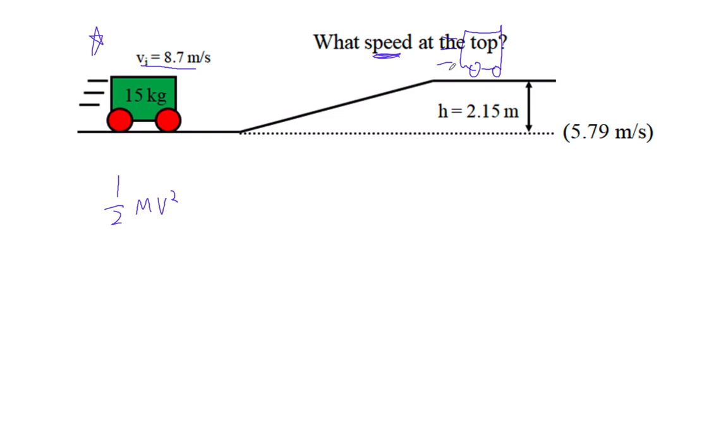Because we figured out that if it just rolled down the hill, it would be going 6.49. This thing's going a bit faster, so it's going to actually be moving at the top.